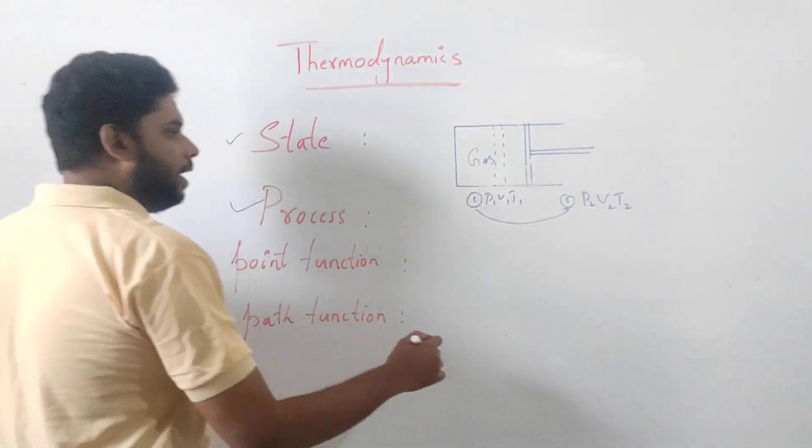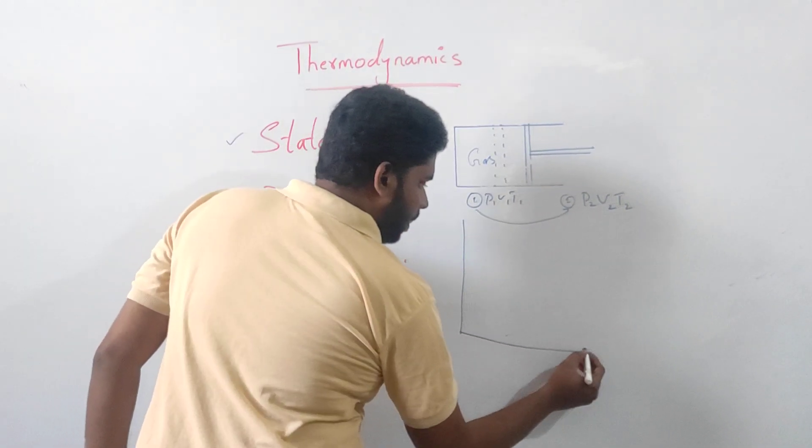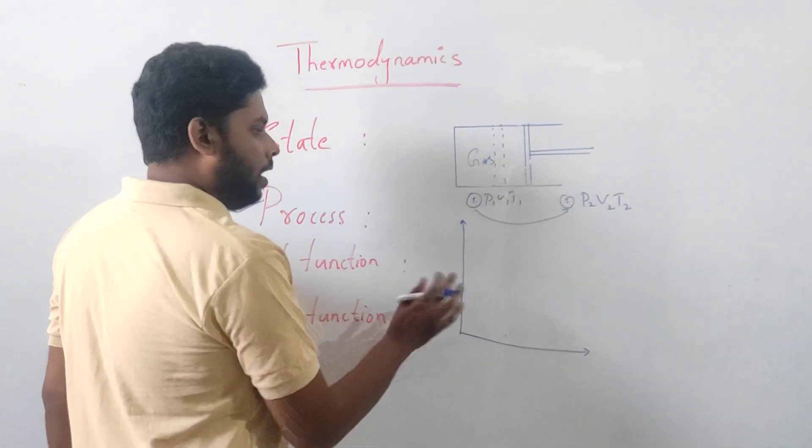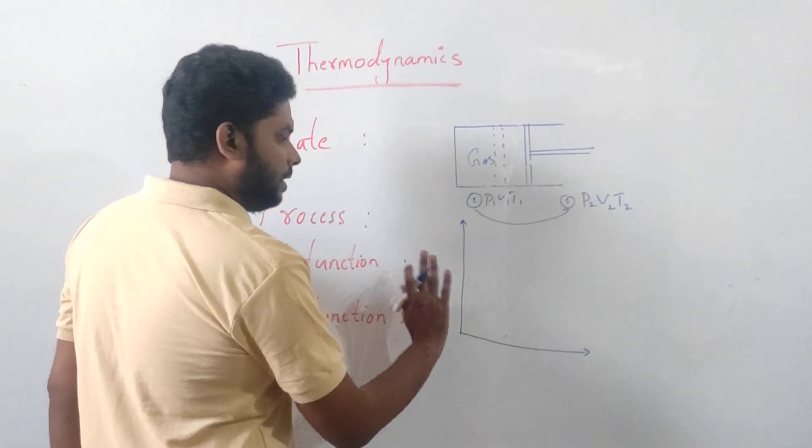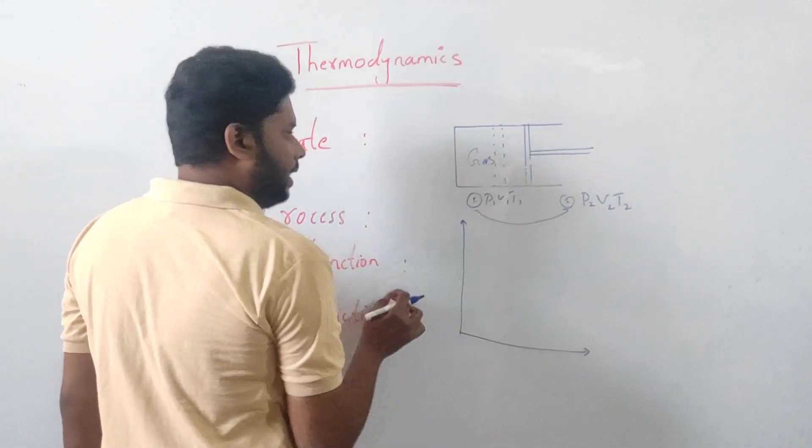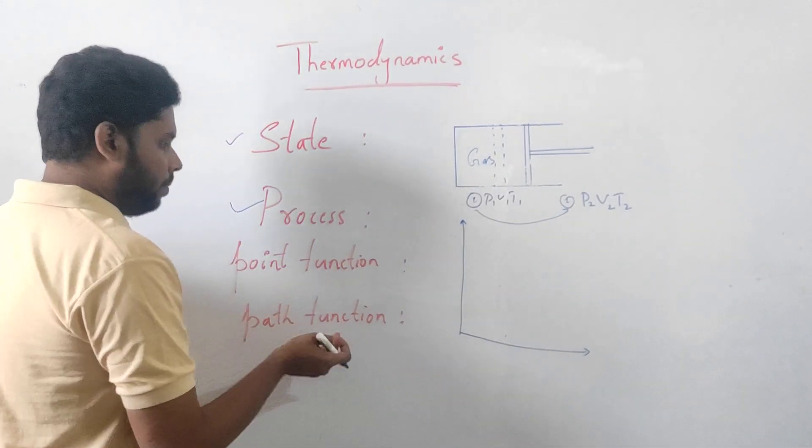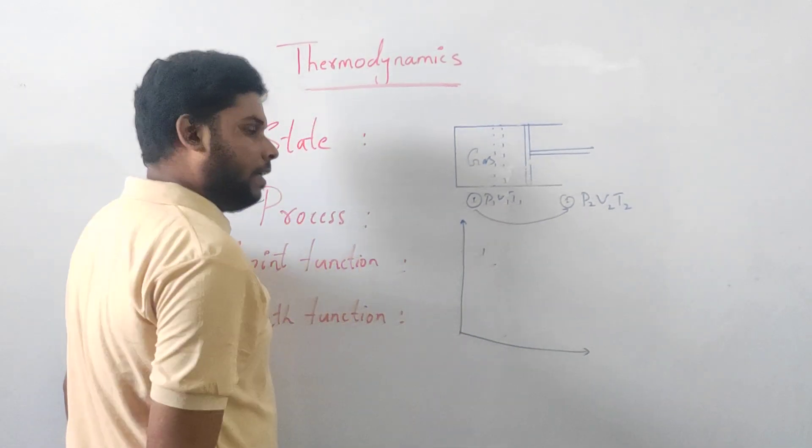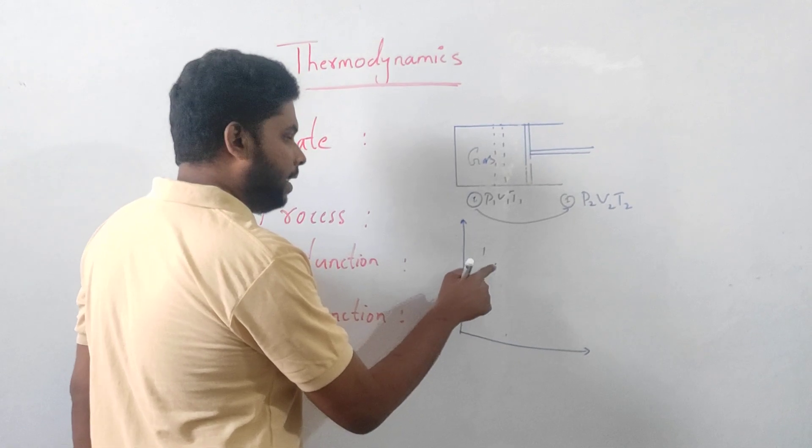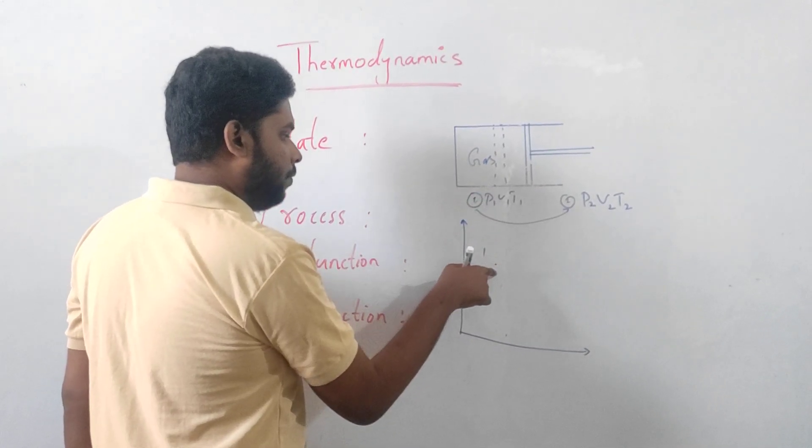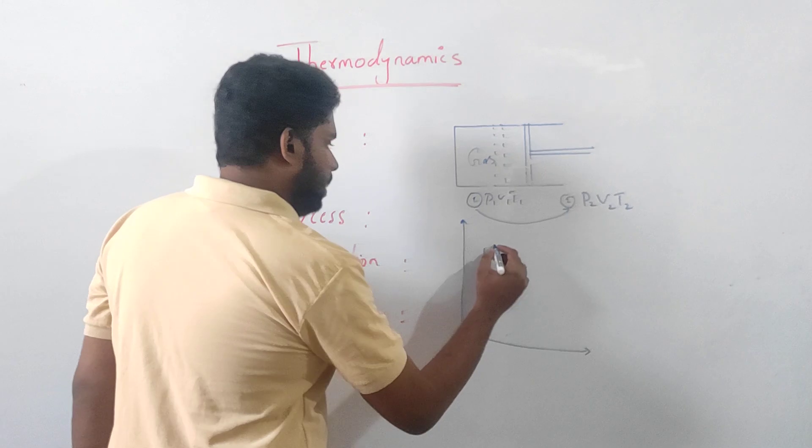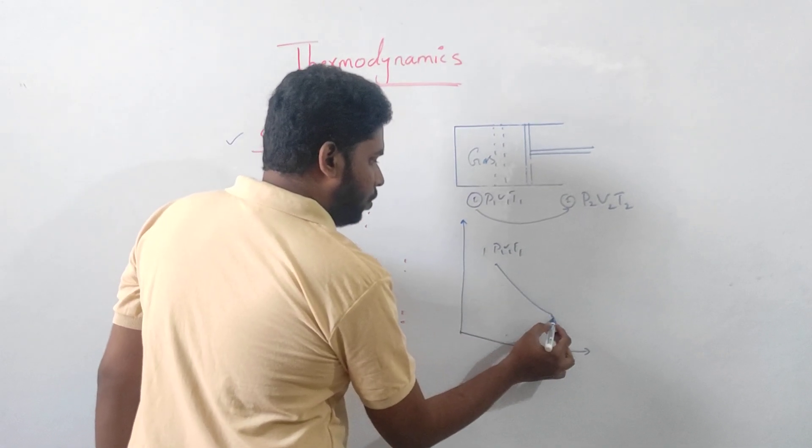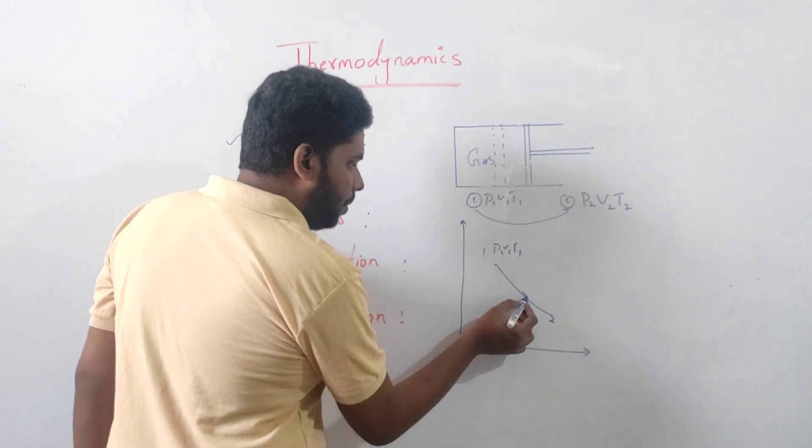Now let me represent it on a graph to explain point function and path function. For example, on a PVT diagram, we can show state, process, point function and path function. State one is the condition of the system - pressure, volume, temperature P1, V1, T1. Change the system to state two. One to two is the process.